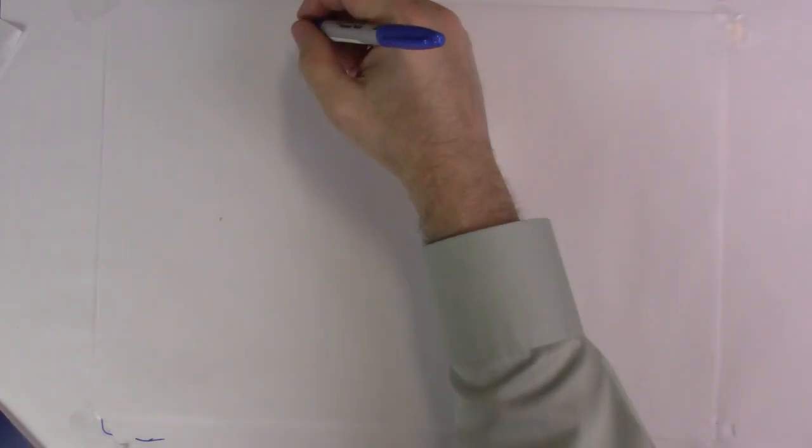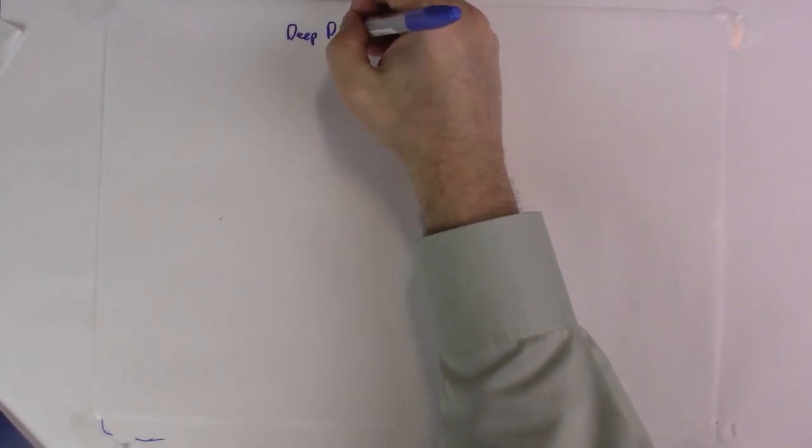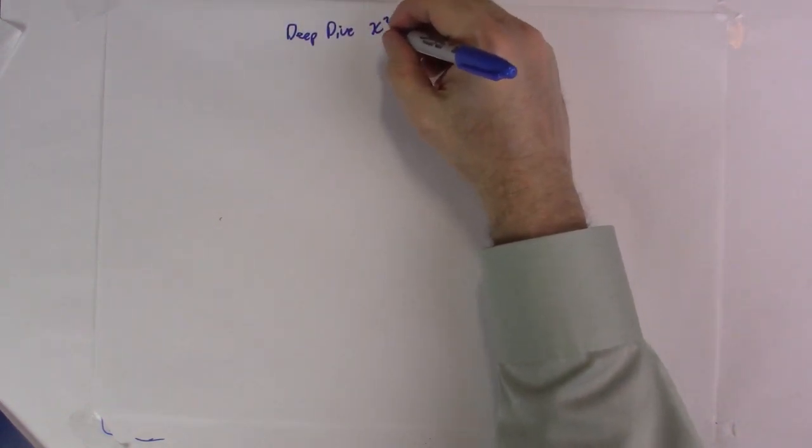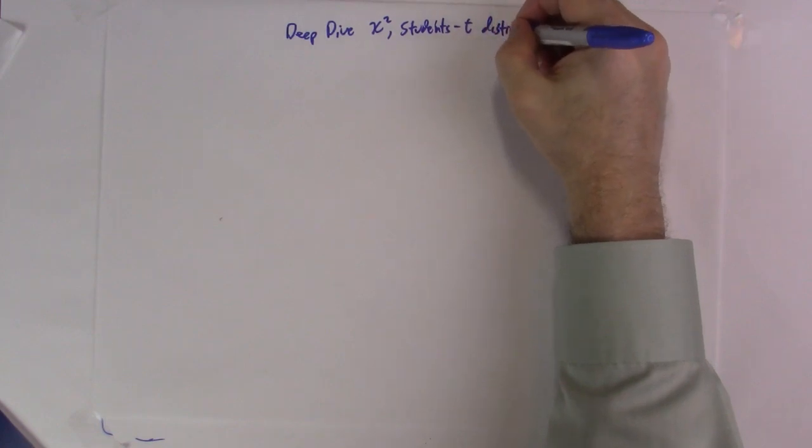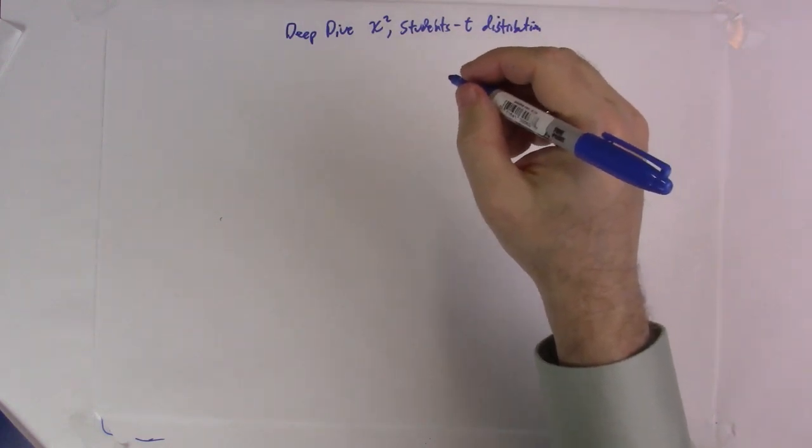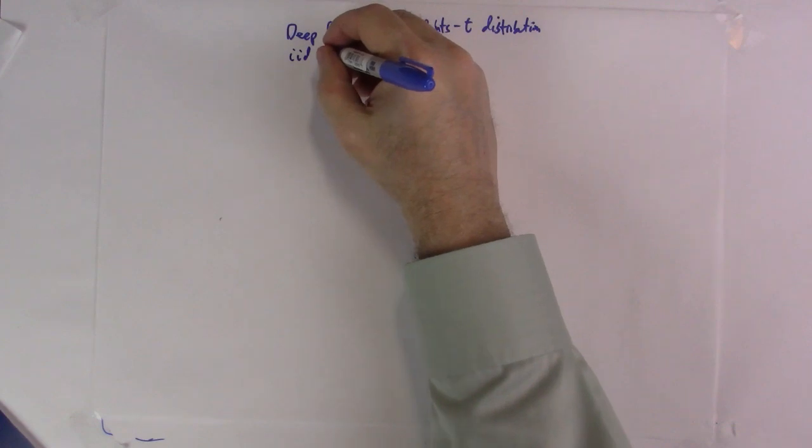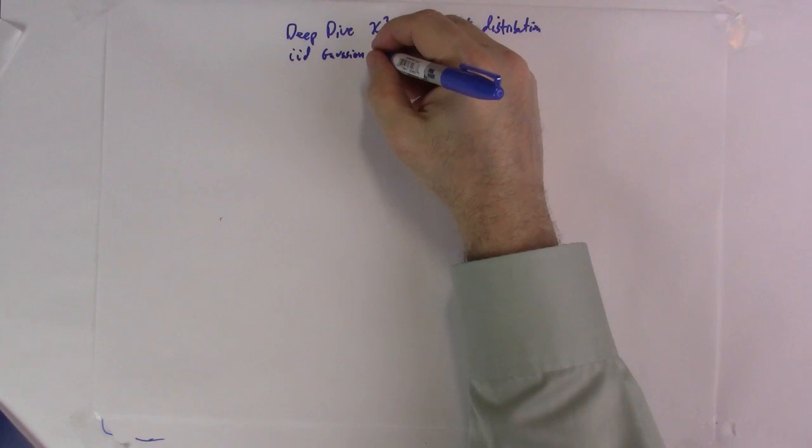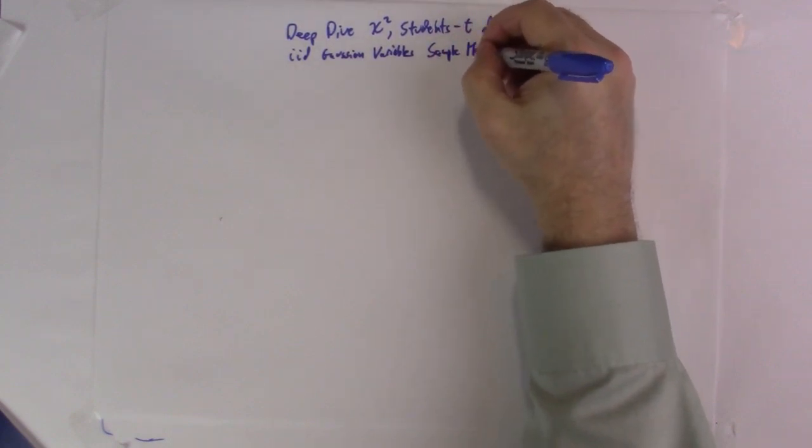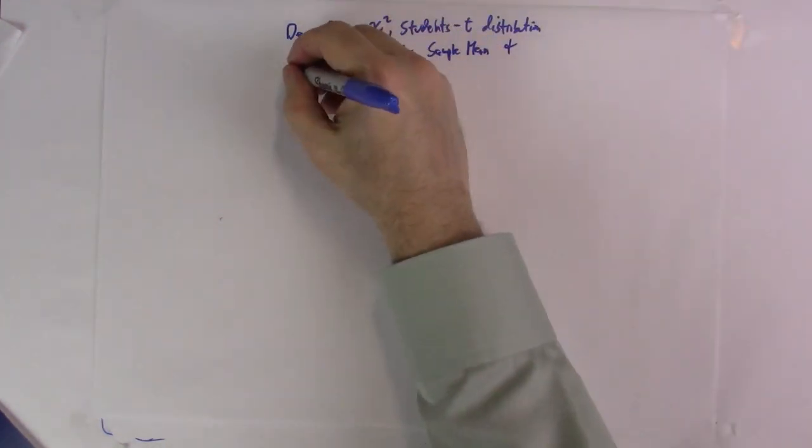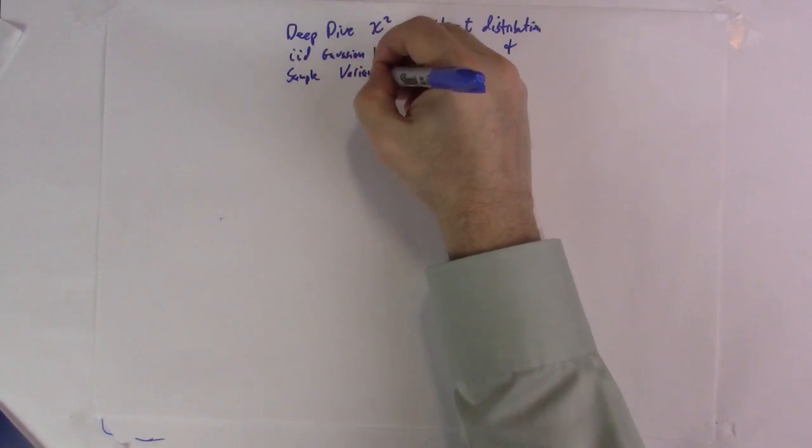Hi, this is Mark Weitzman. I'm a CTA for Edex MITx 18.6051x Introduction to Statistics and I'd like to do a deep dive on the chi-squared, student's t distribution, and also show that for IID Gaussian variables, the sample mean and the sample variance are independent.